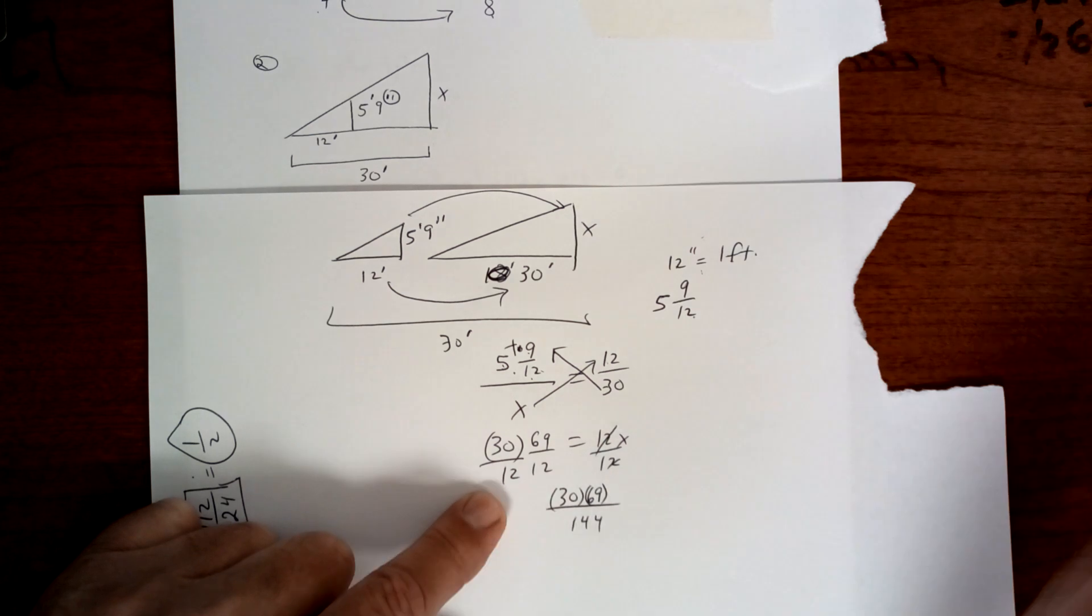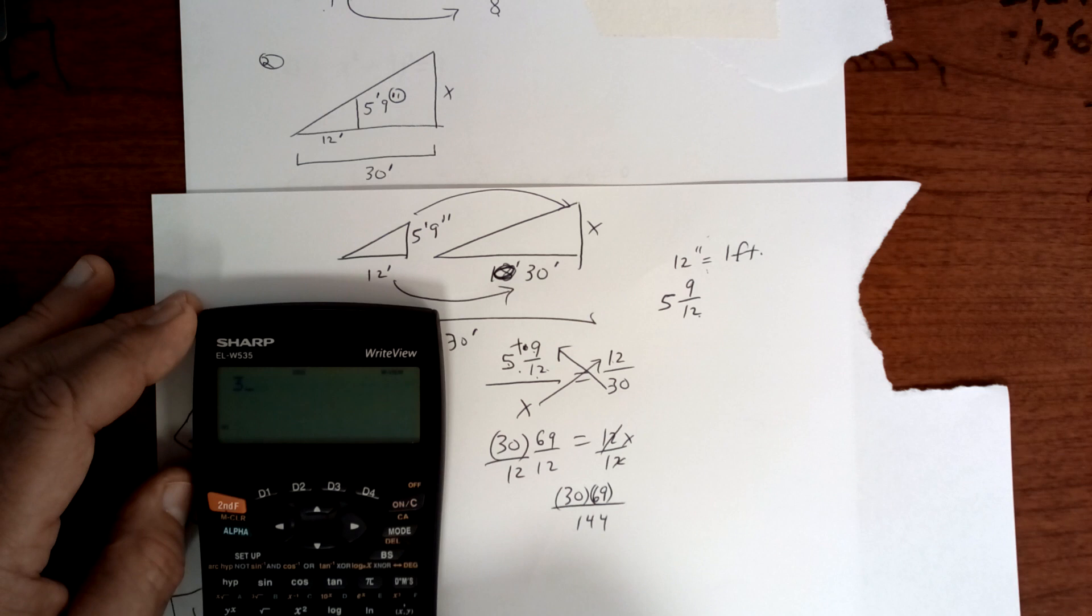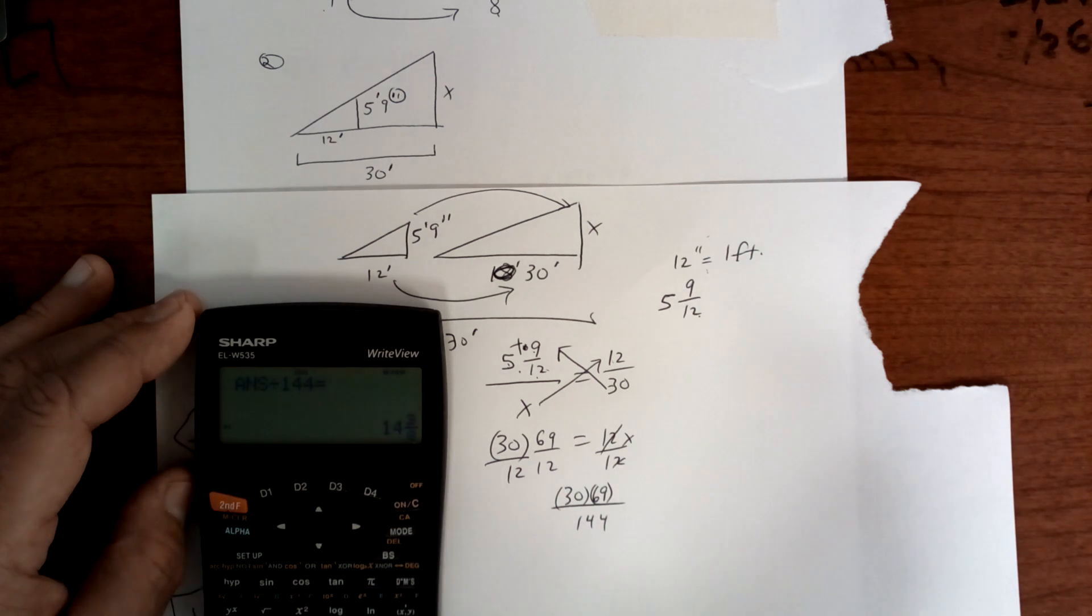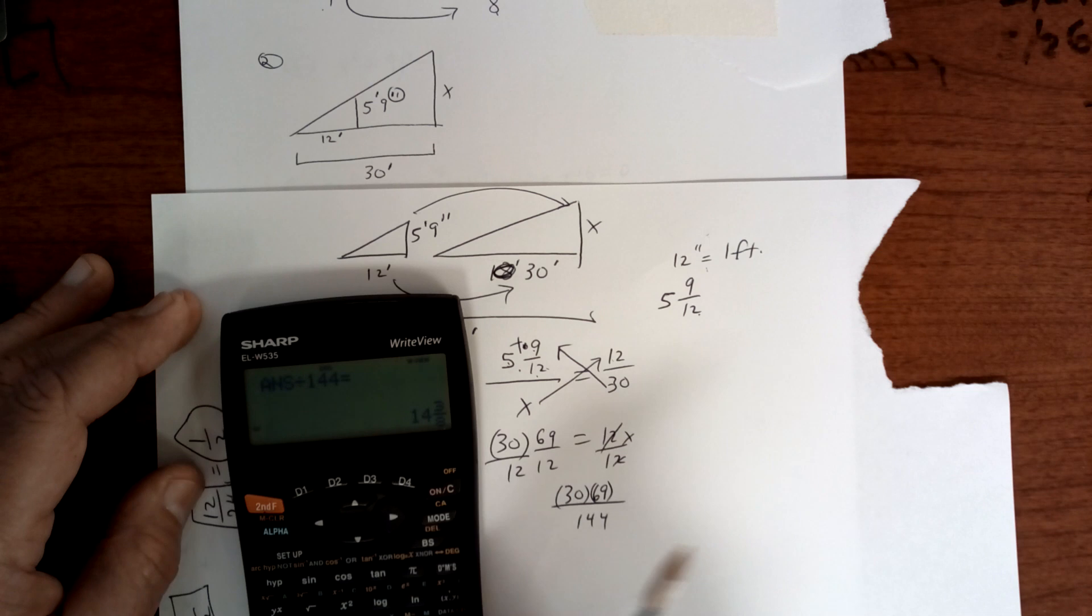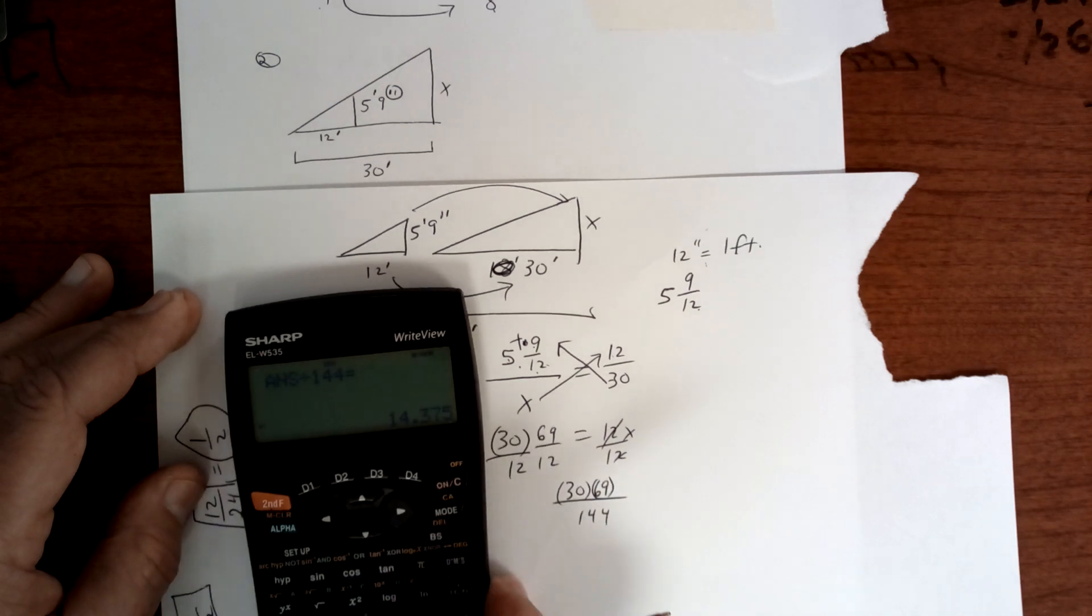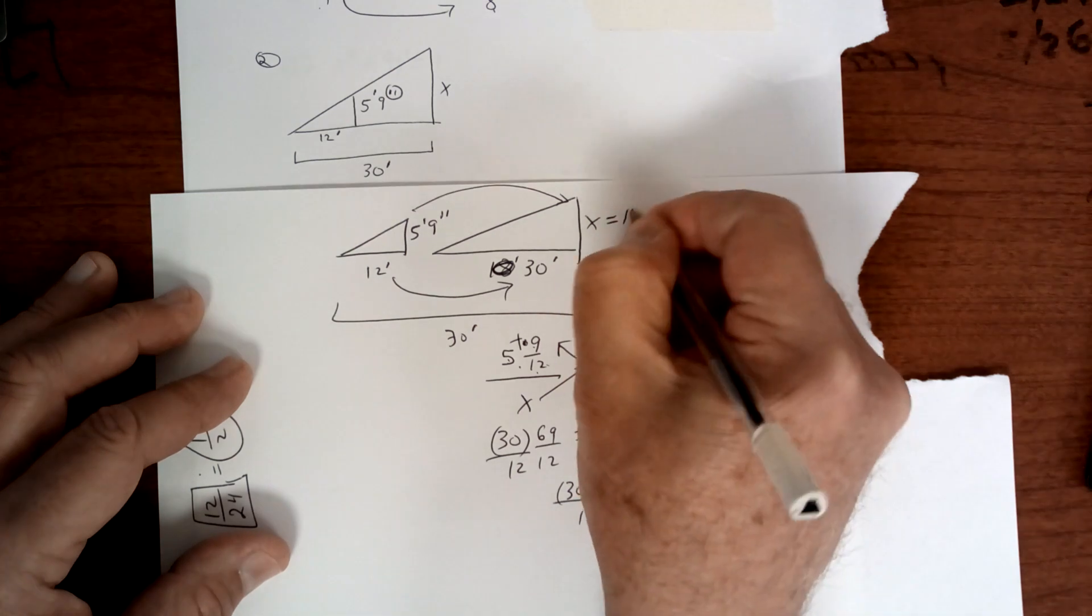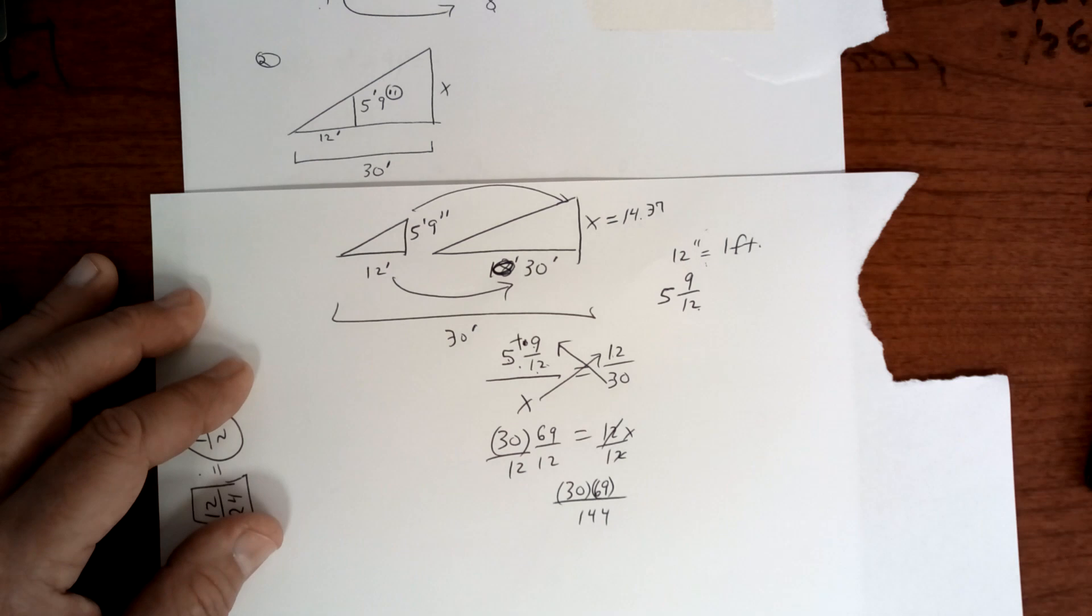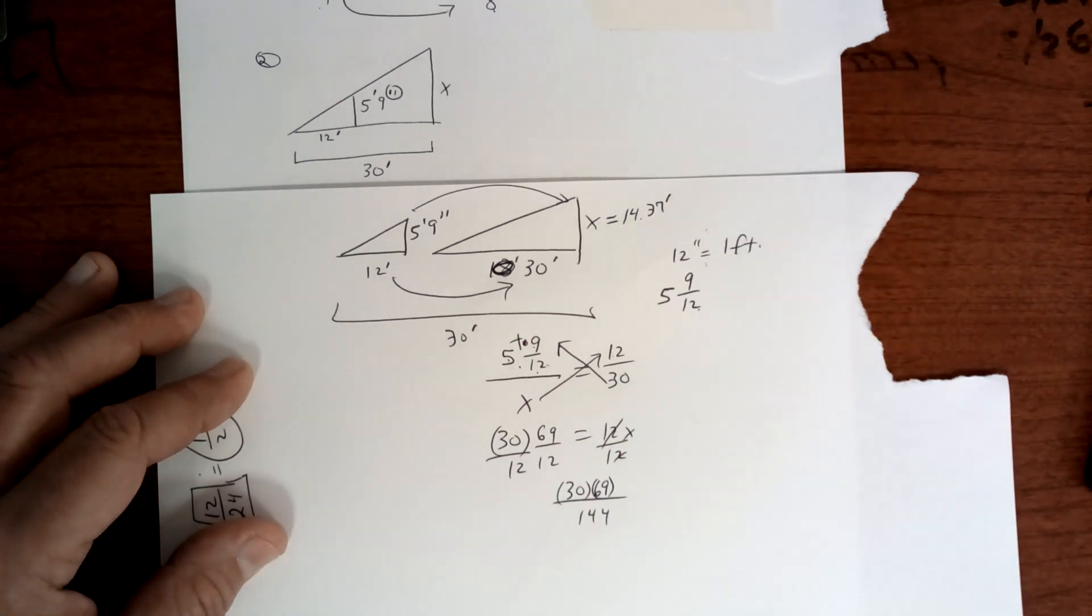Let's see what that is. So 30 times 69 equals divided by 144 equals I get 14 and 3 eighths. 14.37. There it is. That's how you do that. And this is feet. Kind of tricky. Both of these were kind of tricky.